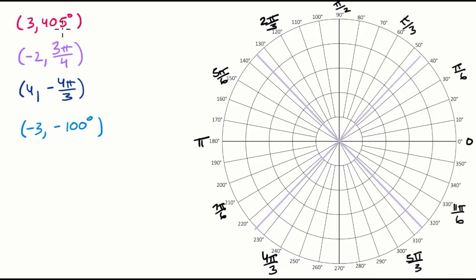Let's start with this first point, (3, 405°). So 405 degrees is interesting because that's more than one full circle around, one revolution. 405 degrees is going to be equal to 360 degrees plus 45 degrees. So we're going to go all the way around, that's 360, and then another 45, which would get us right to that little gray line right over there. And then the radius is three, so we're going to go one, two, three. So that is our point, (3, 405°).